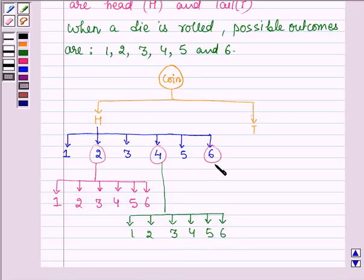And when 6 appears, this time also a die is thrown. So again here, this die has 6 possible outcomes: 1, 2, 3, 4, 5 and 6.